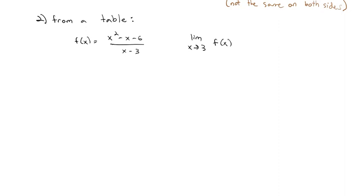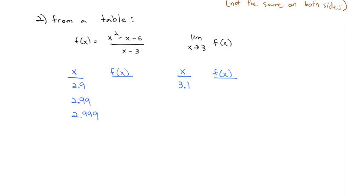The idea is we want to know what's happening close to 3, not at 3. So we pick x-values close to 3 — maybe 2.9 — and see what the function is getting close to. We'll pick even closer values: 2.99 and 2.999. But it has to be doing the same thing on both sides, so we'll also pick x-values on the other side of 3: 3.1, 3.01, and 3.001. The hope is the f(x) values on both sides are getting closer and closer to the same number.